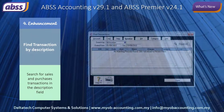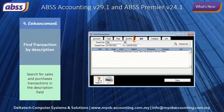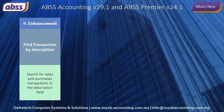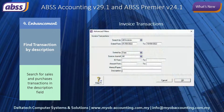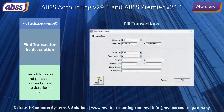The Find Transaction feature in ABSS has been enhanced to include searching in description fields. This feature is available when searching for sales invoices or supplier bills. For invoices, in the Advanced Filters screen, select All Invoices to search by description. For supplier transactions, select to search by bills.